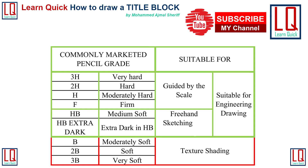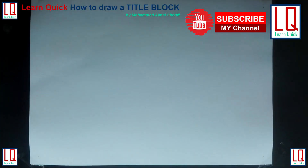The commonly marketed pencil grades H and HB type are most suitable for engineering drawing. B to 3B are in increasing order of smoothness; H to 3H are in increasing order of hardness. H to 3H are suitable when guided by a scale, while HB is suitable for freehand sketching and lettering.